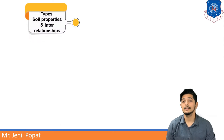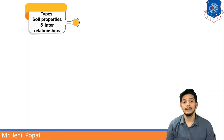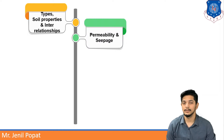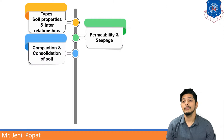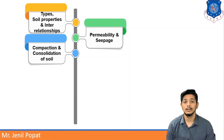Geotechnical Engineering is made up of seven modules. The first module deals with different types of soils, their properties, and interrelationships between them. The second module covers permeability and seepage — it deals with the capability of soil to pass water through it. In the third module, we are going to discuss compaction and consolidation of soil.